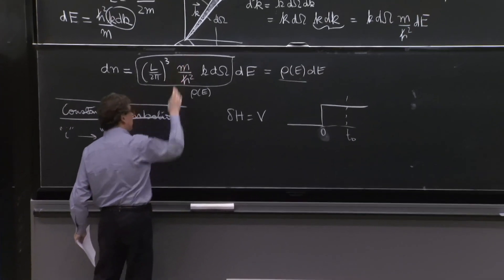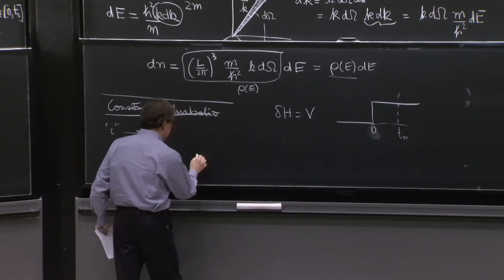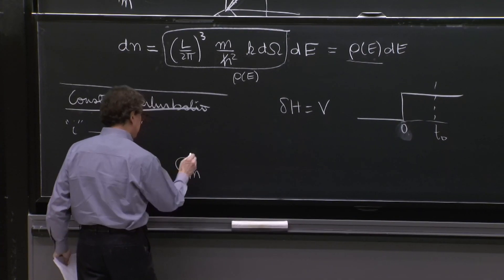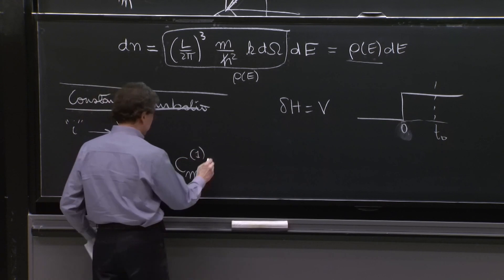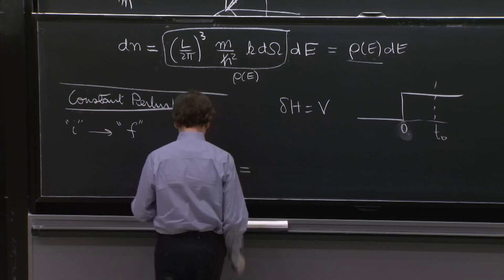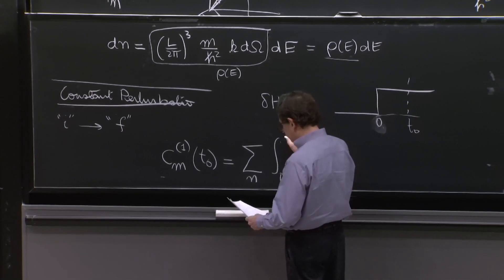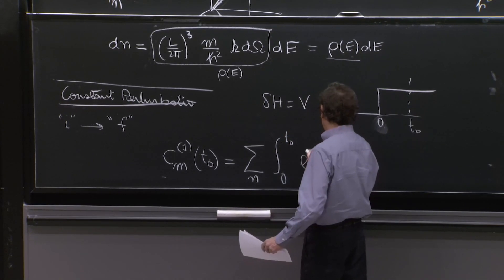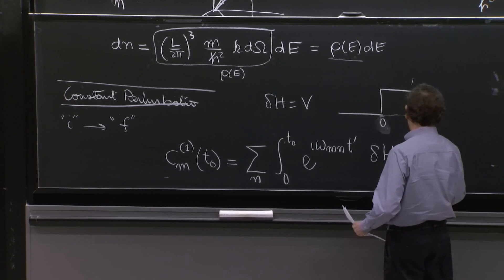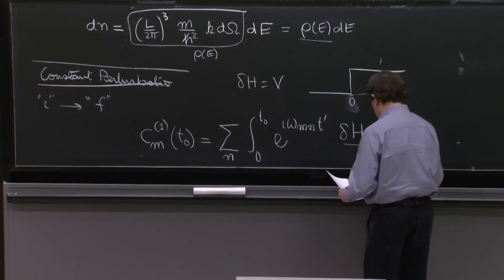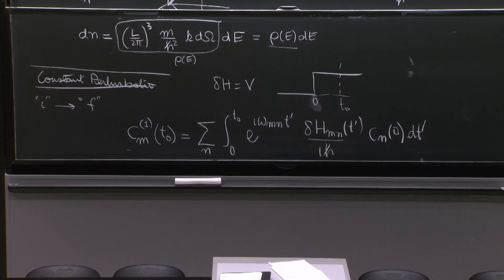But for the time being, we need not know too much. So I'm going to use that key formula that was derived already about perturbation theory and how you get the transition amplitude. So we know that the coefficient c associated to the m state, the first order in perturbation theory at the time t0 can be computed as a sum over all n integral from 0 to t0 e to the i omega m n t prime delta H m n t prime over i h bar c n 0 d t prime.